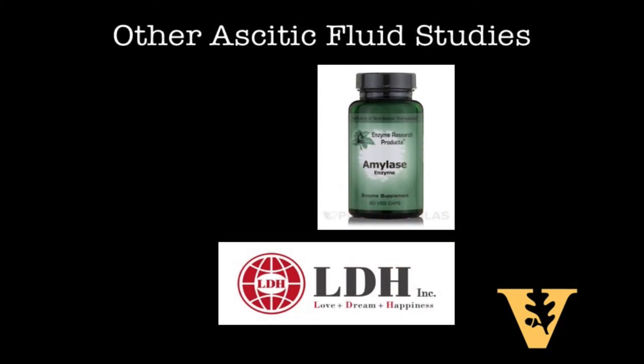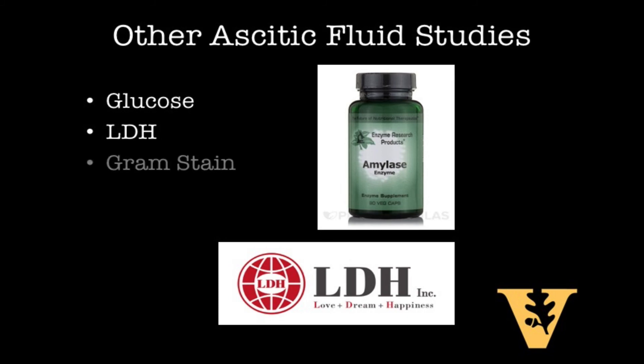Glucose and LDH levels are useful for Runyon's criteria, but in general a low glucose will push your differential towards infection or malignancy — think of high metabolizing cells. Similarly, an elevated LDH is concerning, but if the ascitic fluid LDH to serum LDH ratio is greater than 1.0, then you should also have bowel perforation on your differential. A gram stain with an abundance of polymicrobial growth is another good study if you're worried about a bowel perforation.